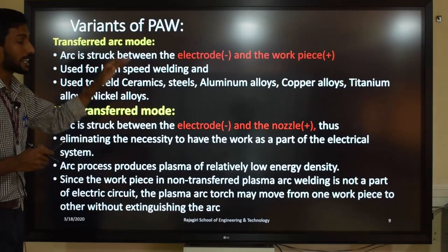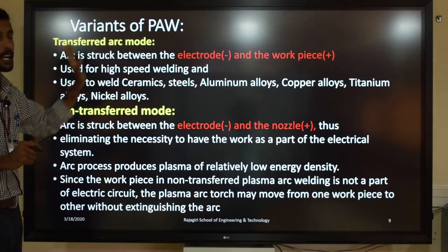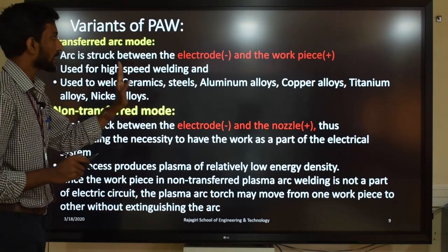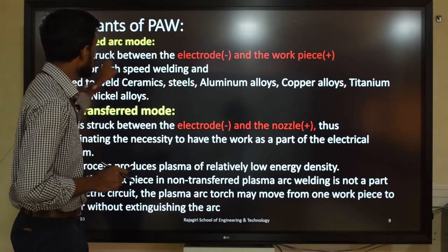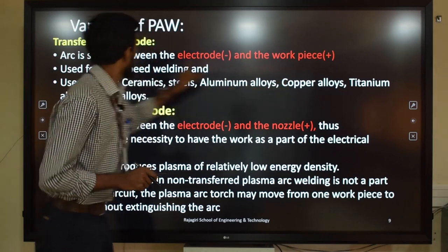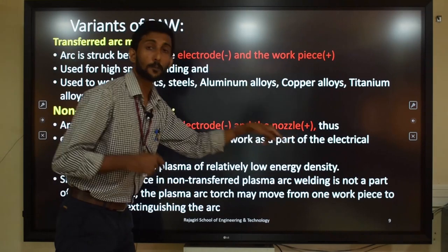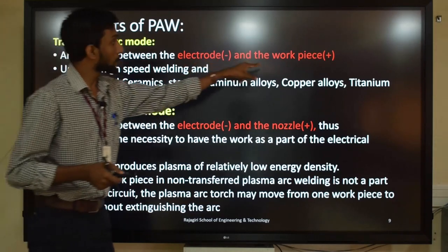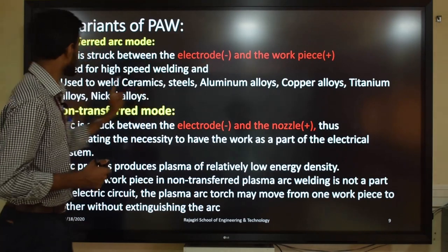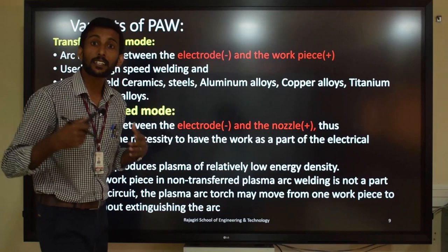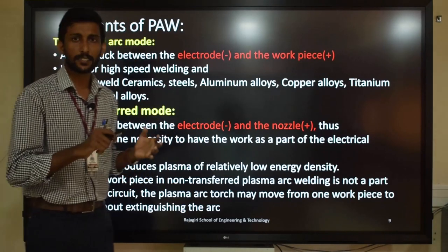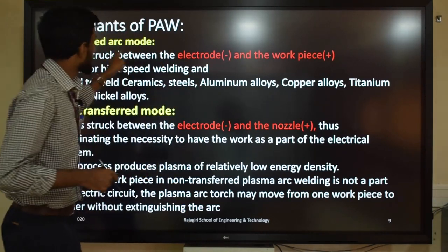Now we will define the variants of plasma arc welding. The first is transferred arc mode and the second is non-transferred arc mode. In transferred arc mode, the arc is struck between the electrode and the workpiece. This gives high temperature and high energy and is used for high-speed welding. It is used for ceramics, aluminum alloys, copper alloys, titanium alloys, nickel alloys, and similar materials.